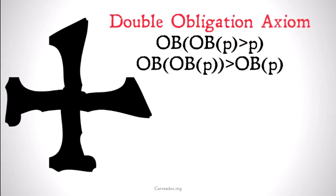This will be known as the double obligation axiom. It's defined as: it's obligatory that, if it's obligatory that P, then P. Or as a corollary: it's obligatory that it's obligatory that P implies it's obligatory that P.